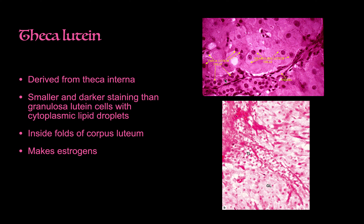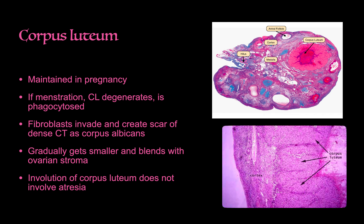The theca lutein cells derive from the theca interna — also eosinophilic but staining slightly darker, with lipid droplets in the cytoplasm. They are found in the folds of the corpus luteum and their main role is estrogen production. The corpus luteum is maintained during pregnancy. If menstruation occurs, it degenerates: fibroblasts invade, creating dense connective tissue scar tissue called the corpus albicans, which gradually blends into the ovarian stroma. This involution does not involve atresia.